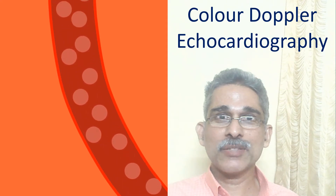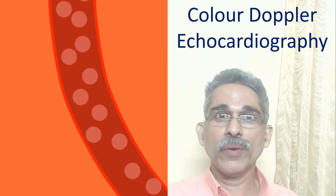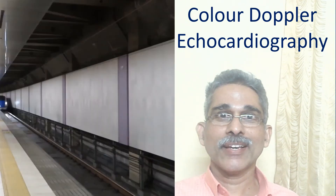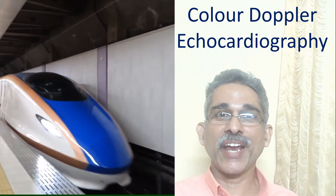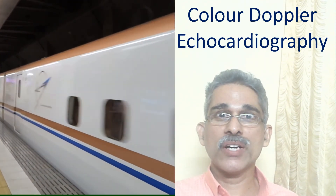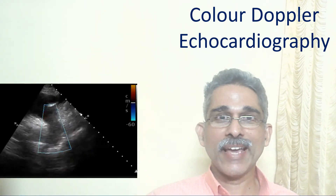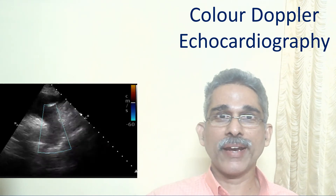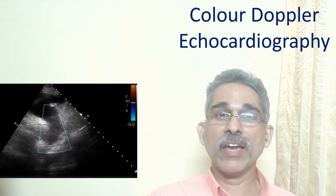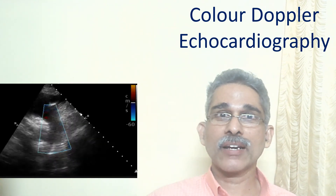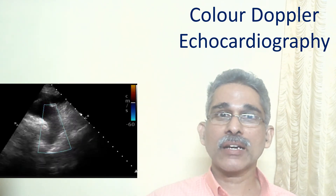Doppler imaging works by analyzing the echoes of the ultrasound beam from moving red blood cells. You will be familiar with the difference in the sound of a moving train when it comes towards you and when it moves away from you — the same principle is applied in Doppler echocardiography. Signals from blood moving away from the probe are color coded blue, and blood moving towards the probe is color coded red.